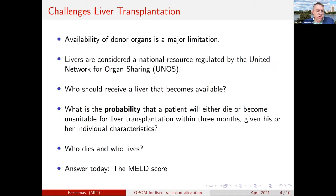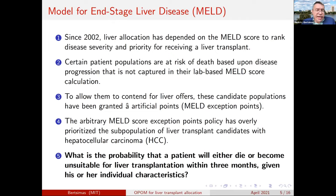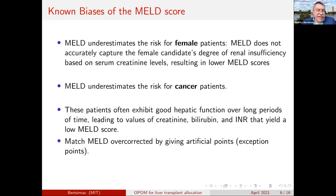The current method the nation uses is the so-called MELD score — a simple logistic regression model with three variables that has been used since 2002 to improve overall ranking of disease severity and priority for receiving a liver transplant. However, the MELD score has well-documented difficulties. For example, MELD underestimates risk for female patients — it does not accurately capture the female candidate's degree of renal insufficiency based on serum creatinine level, which typically results in lower MELD scores and underrepresentation of female patients on the transplantation list.